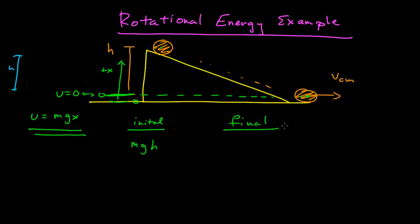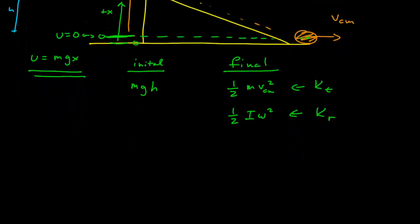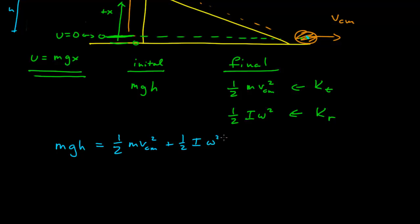So what is our final energy? Well, it has some kinetic energy of translation, which is one-half m v_cm squared, but it also has kinetic energy of rotation when it reaches the bottom. That kinetic energy of rotation is one-half I omega squared. So our statement of conservation of energy says mgh equals one-half m v_cm squared plus one-half I omega squared — translational kinetic energy plus rotational kinetic energy.